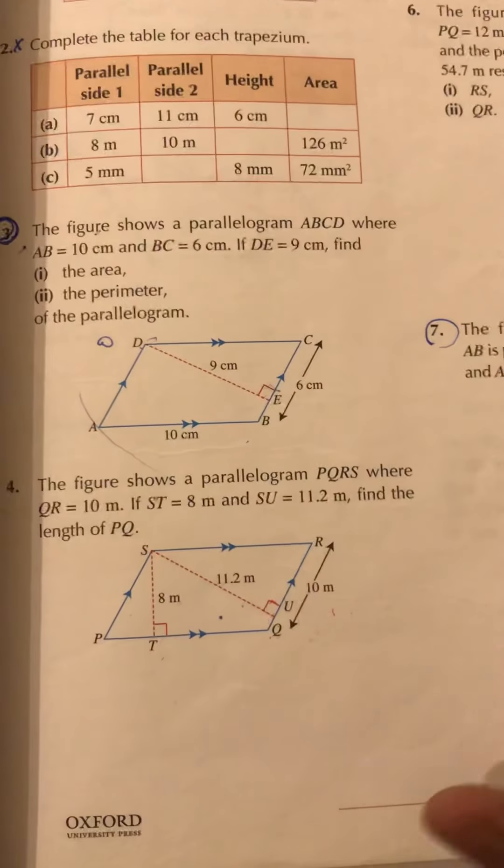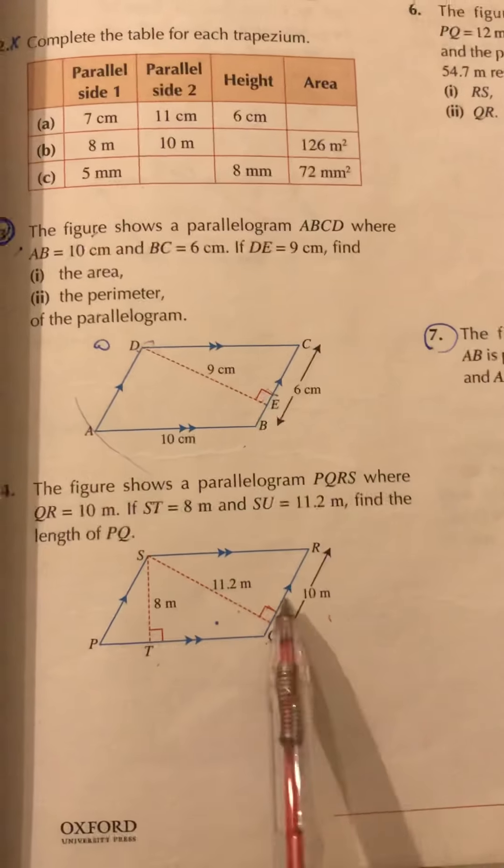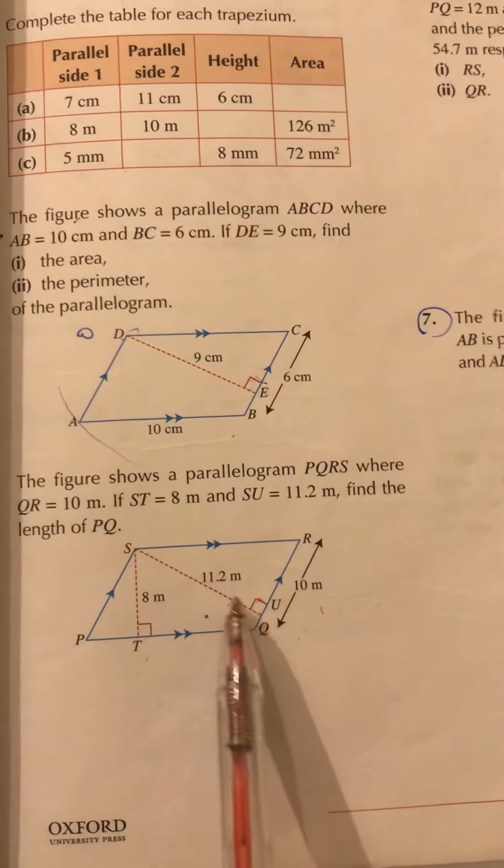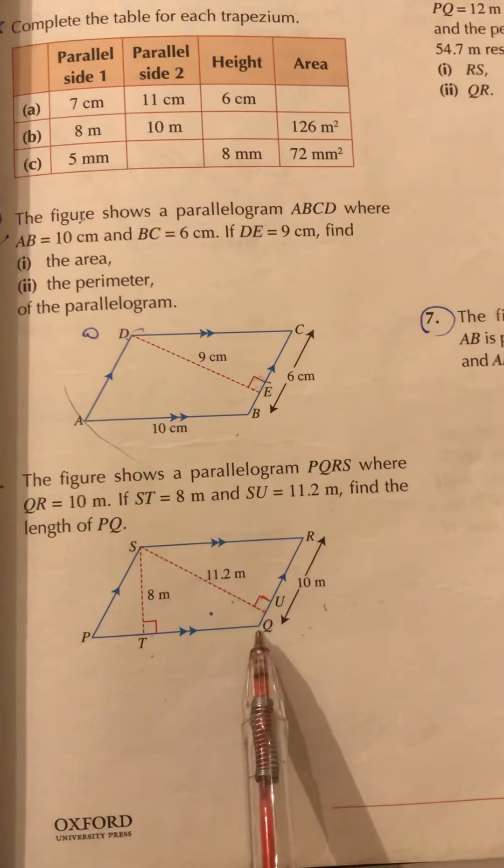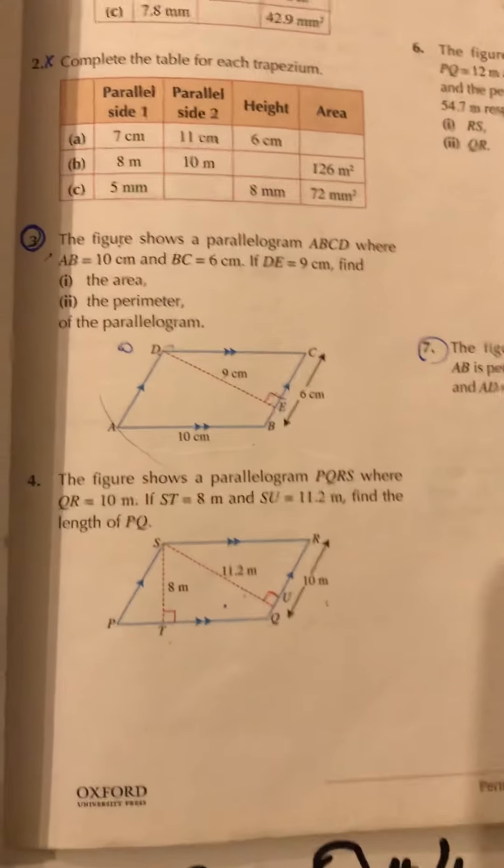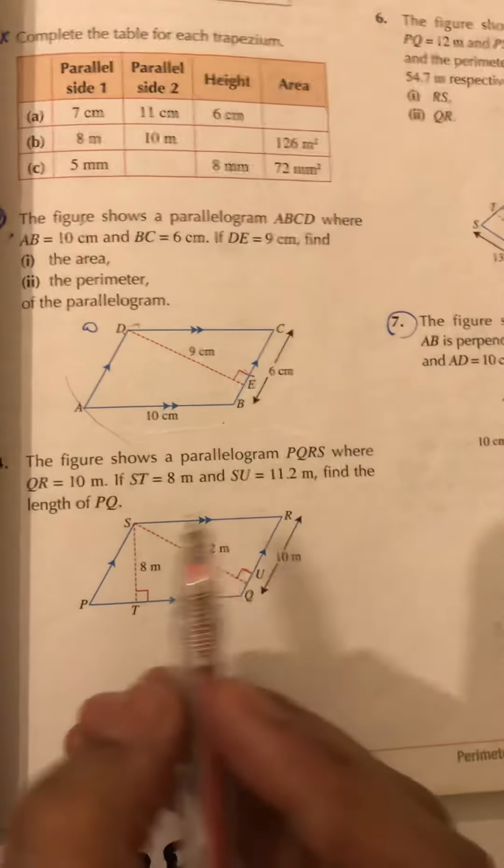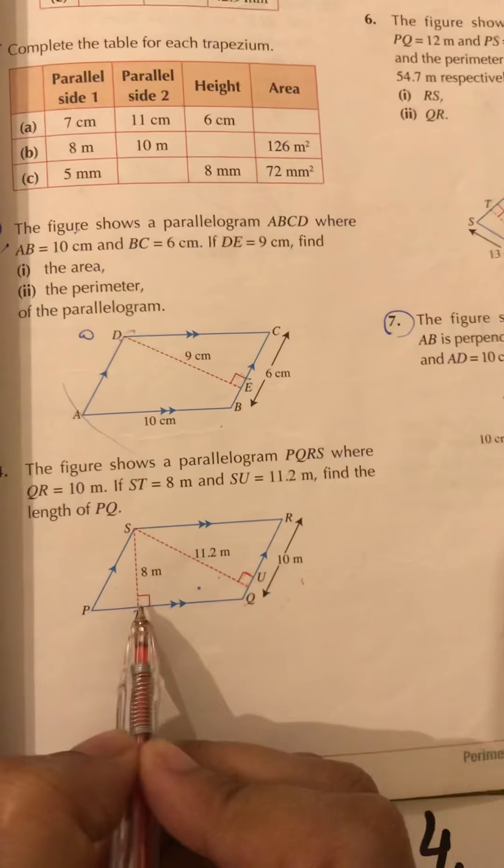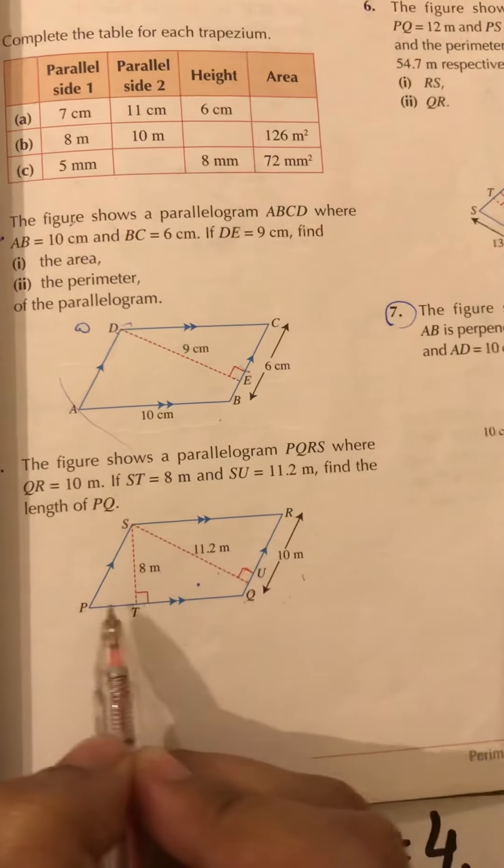So as it is provided, one of the perpendicular heights and the base, we are going to find out the area of the parallelogram. And with that area of the parallelogram, we are going to substitute this perpendicular height and then we're going to find out this base length PQ. So let's start with the solution.